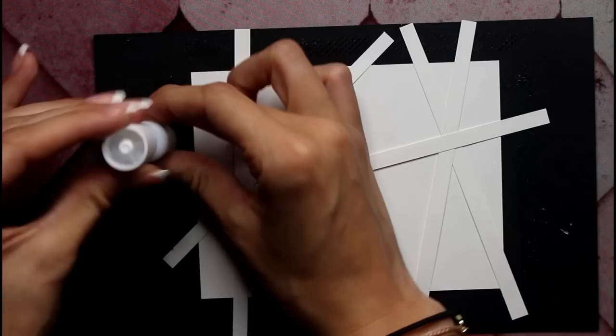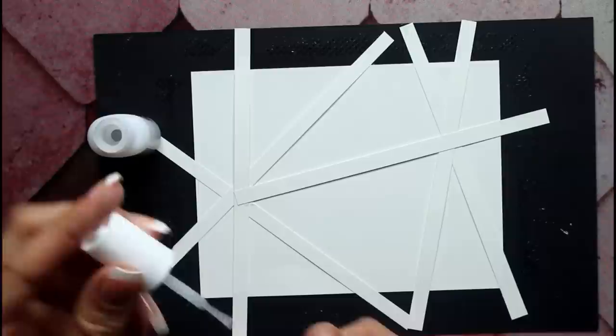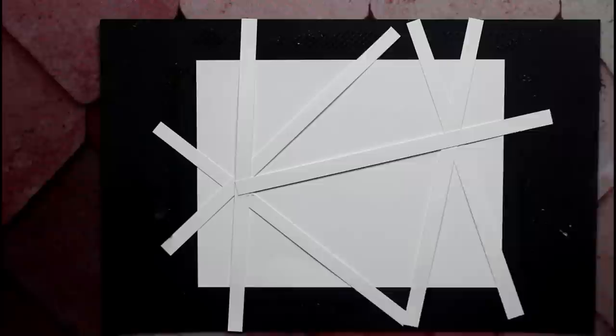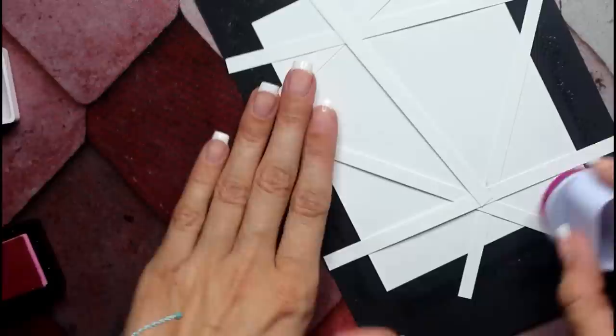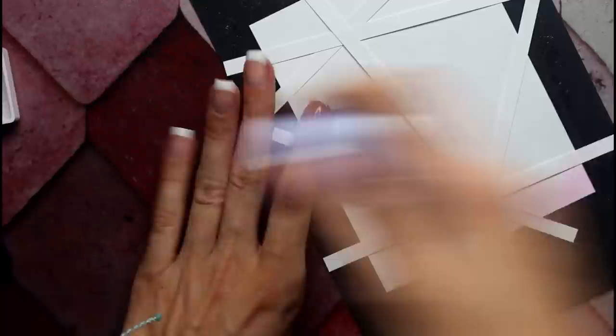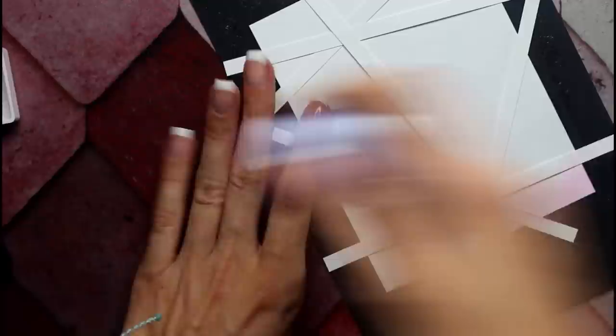Take a quick second to glue your thumbnail back on because you're living a lie and your nails underneath are stumps. I'm going to start with my bubblegum pink ink. I'm gonna start on this side and blend it to a little over a third of the way.